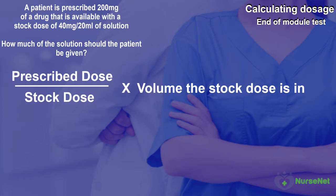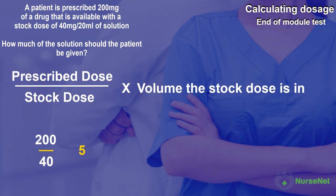In the question we have been given the prescribed dose as 200mg and the stock dose as 40mg. If we put these numbers into our stock dose calculation we get prescribed dose of 200mg divided by the stock dose of 40mg, which gives us an answer of 5. 5 multiplied by the volume the stock dose is in, which in this case is 20ml, gives us our answer of 100ml.